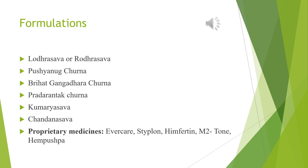Pushyanuga Churna is used in dysmenorrhea, irregular menstrual bleeding and excessive menstrual bleeding. Brihat Gangadhara Churna is indicated in diarrhea, dysentery and colitis. Other formulations include Pradarantak Churna, Kumaryasava and Chandanasava. Proprietary medicines include Evcare, Styplon, Hemophytine, Emputone and Hemapushpa.